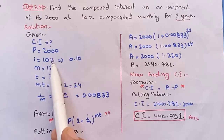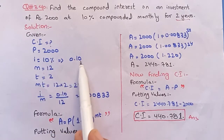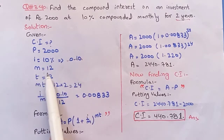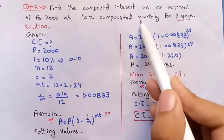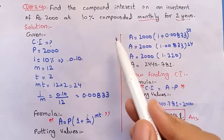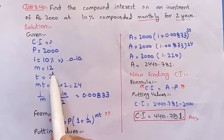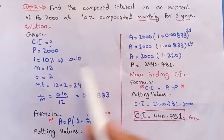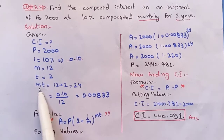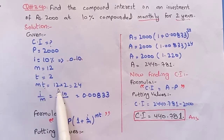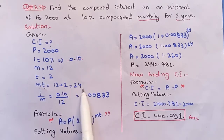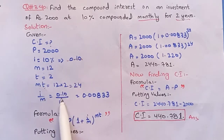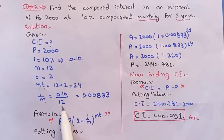Interest rate i = 10%, so 10 divided by 100 gives 0.10. Compounding is monthly, so m = 12. Time t = 2 years. Finding mt: 12 × 2 = 24. Finding i divided by m: 0.10 divided by 12 equals 0.00833.